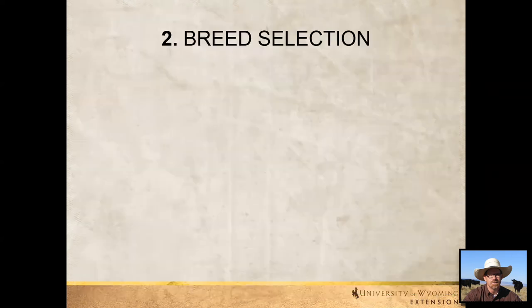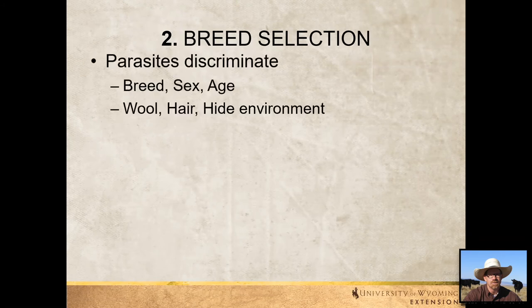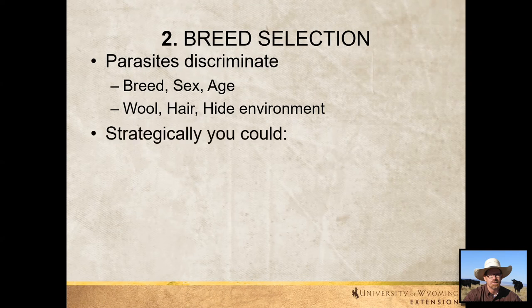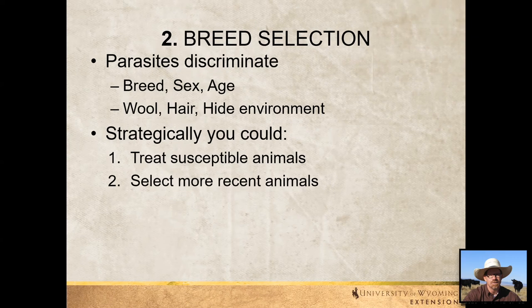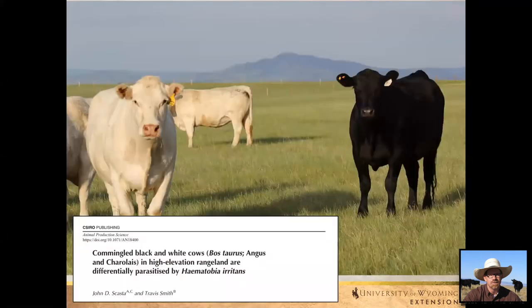The second strategy is breed selection. Parasites discriminate based on breed, sex, age, wool type — medium wool versus fine wool — hair follicle density, hair color, hide environment, and hide thickness. All these parasites, as they're out looking for a suitable host, are discriminating across different animals, and we can use that to our advantage. Strategically, you could treat only susceptible animals — a subset of the herd — or you could select animals that consistently show more resistance to flies. I'd be happy to share the paper we published on this with anybody.